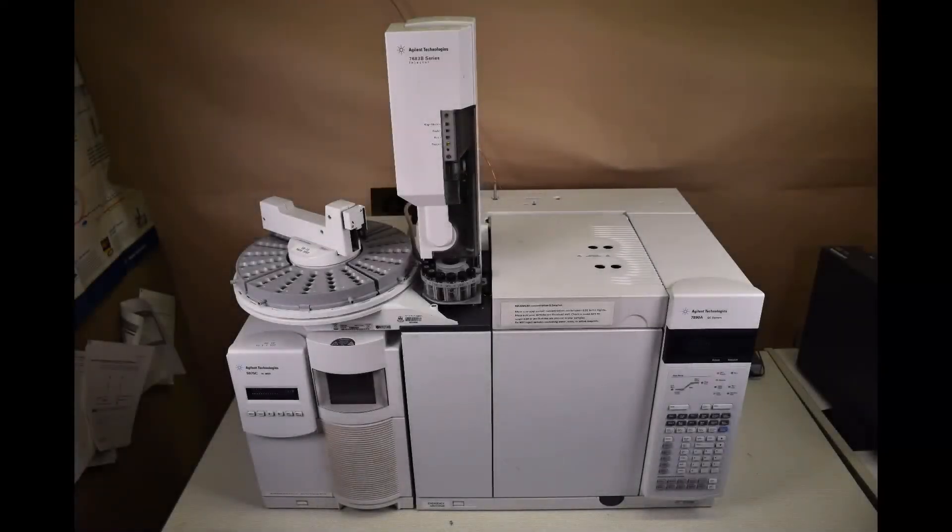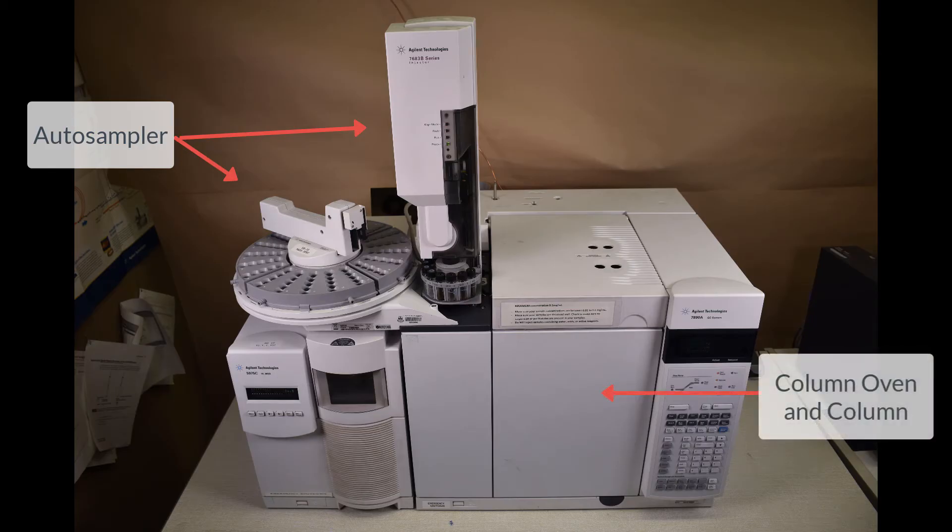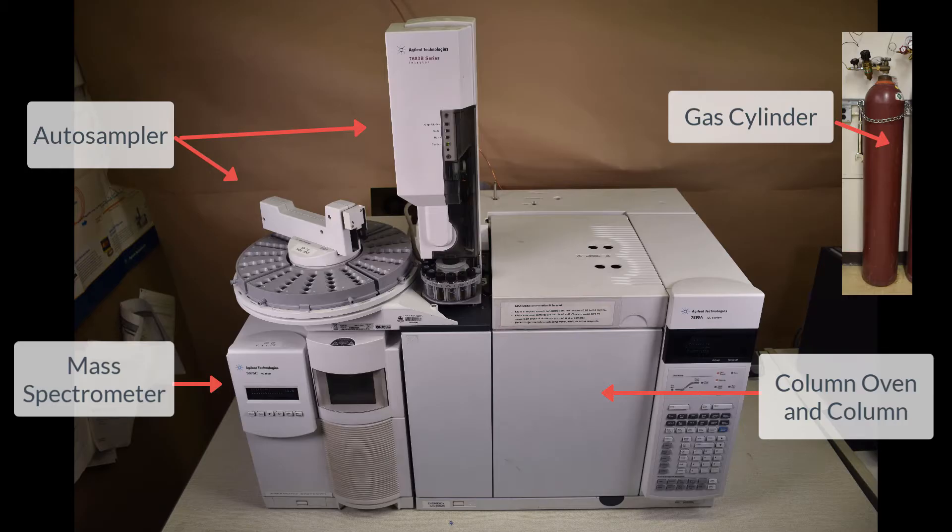This is a GC-MS composed of an auto-sampler, a column oven and column, a mass spectrometer, a gas cylinder. Not shown is a computer that controls the GC-MS and collects data.